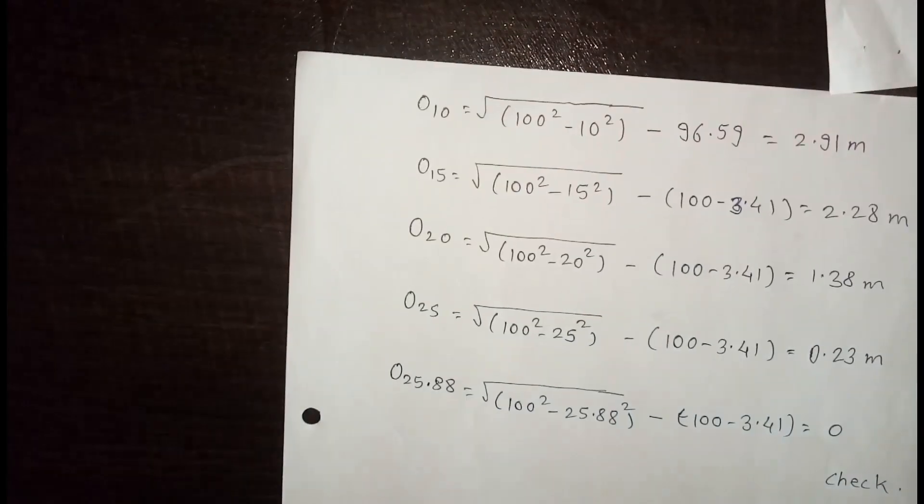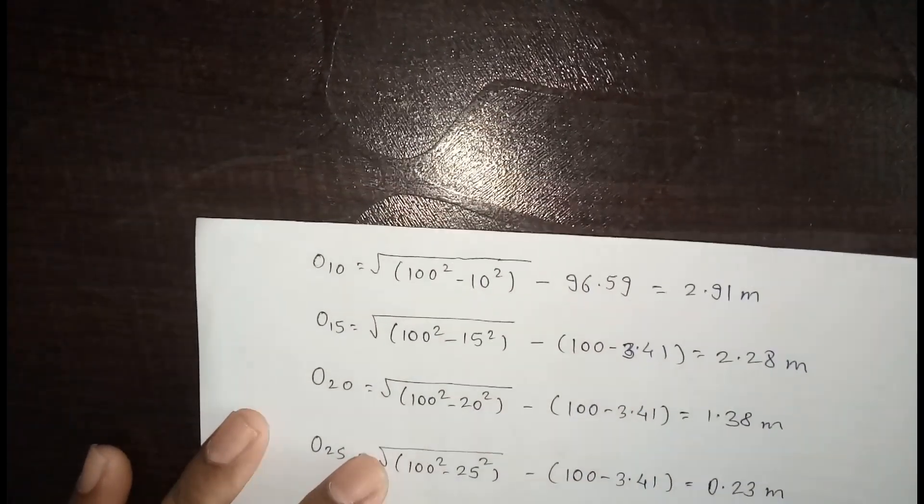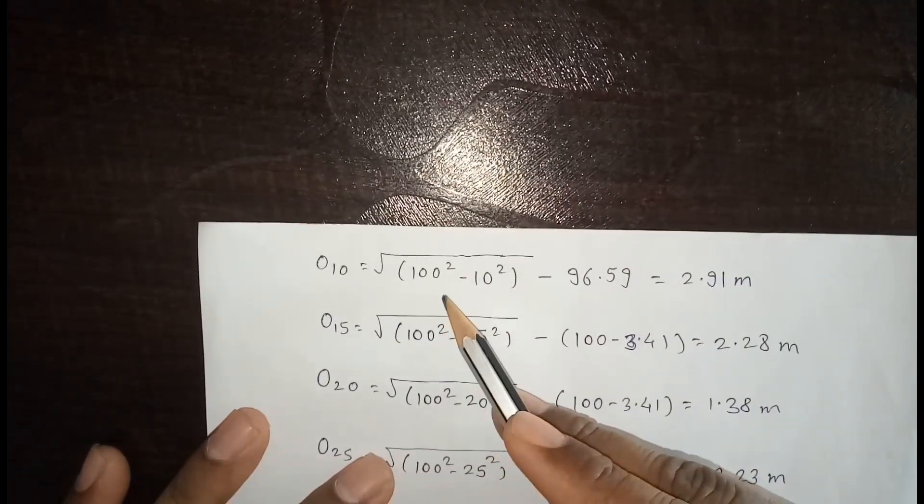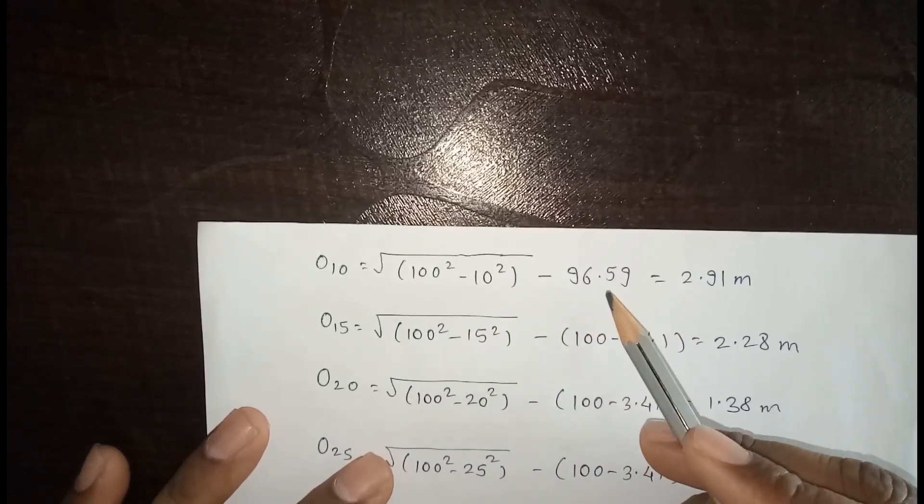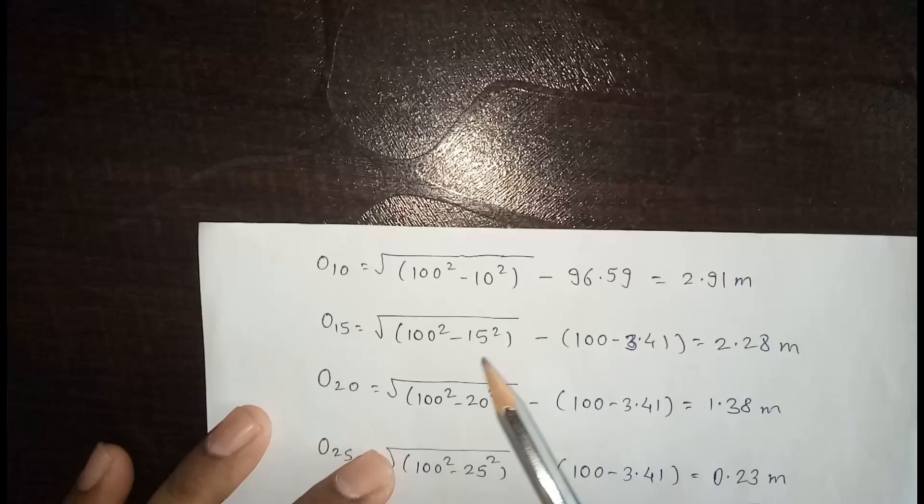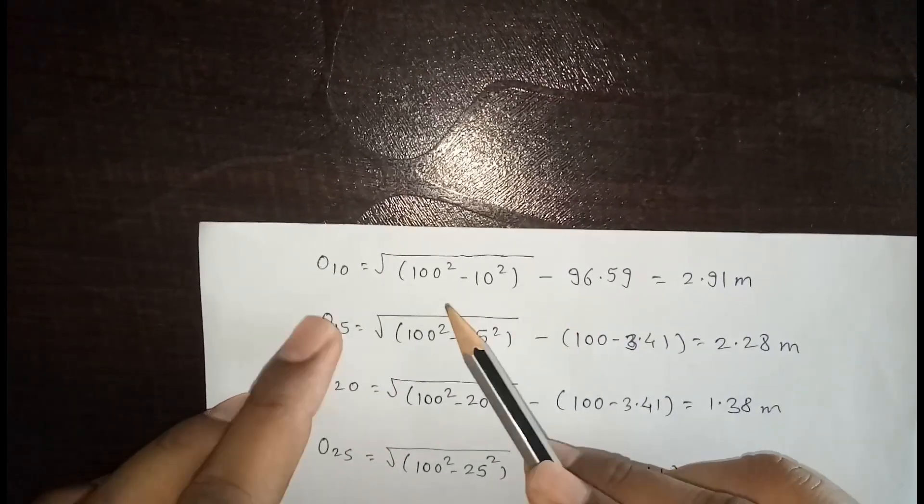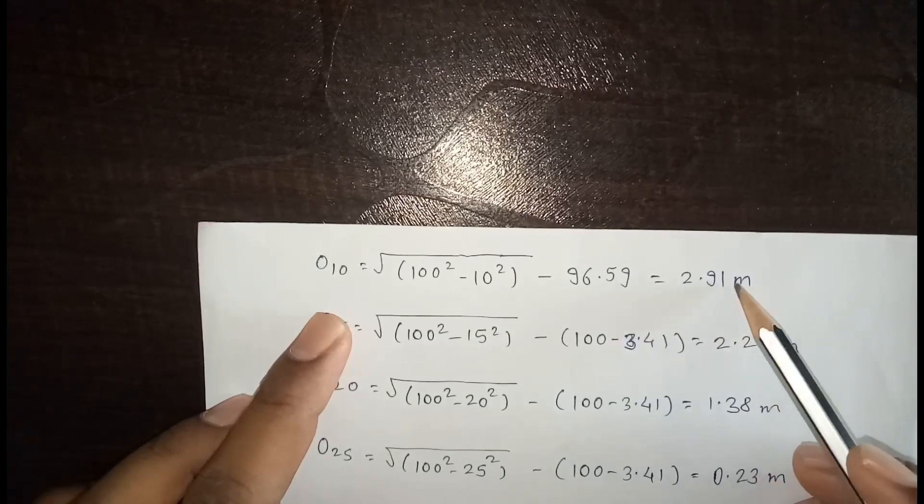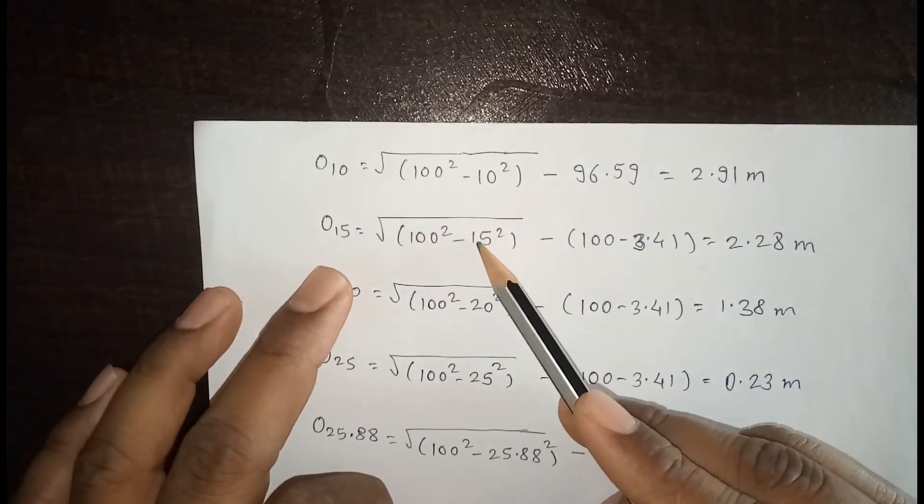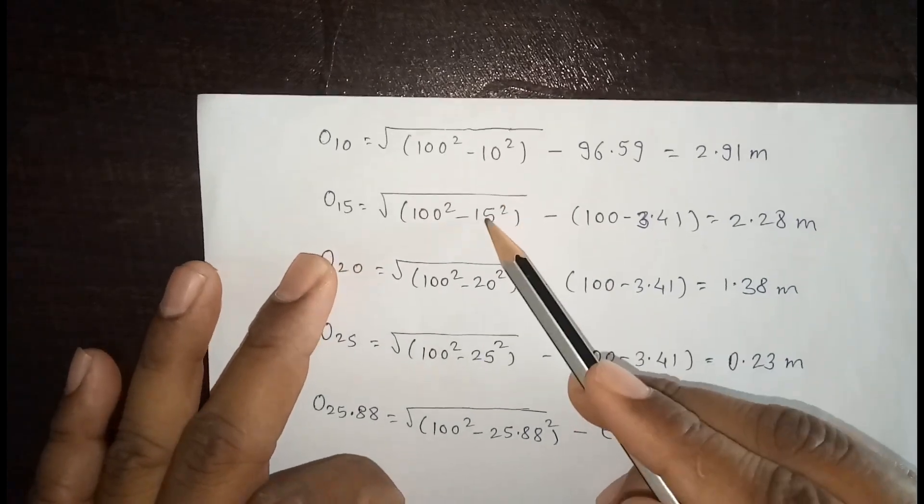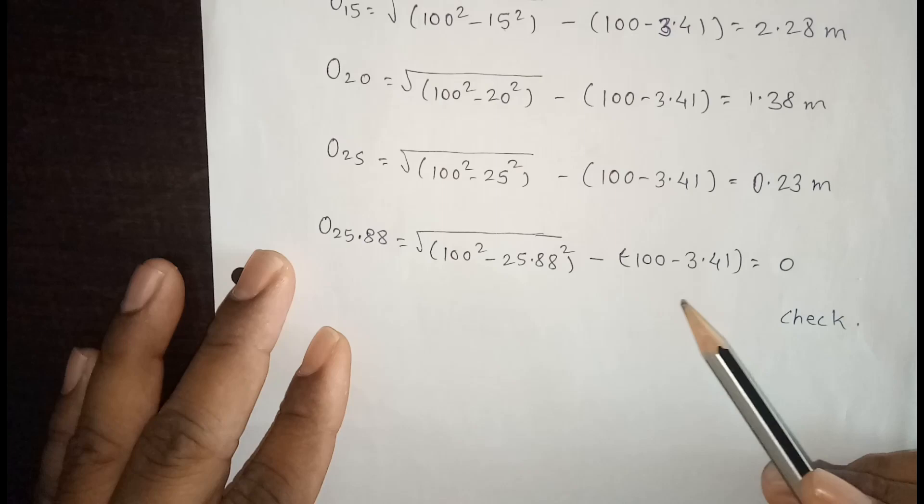Now for 0, 10. For 0, 10, again the formula is same. R square minus X square minus R minus O0. So R minus O0 is 96.59. So for 10, it is 2.91. Now for O15. Again we have to only change these values. 10, 15, 20, 25 and 25.88.